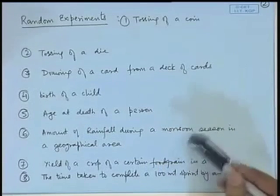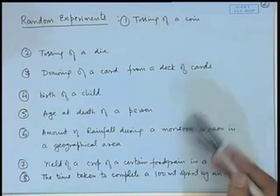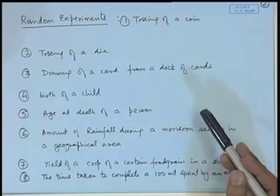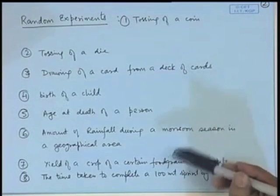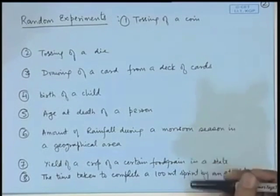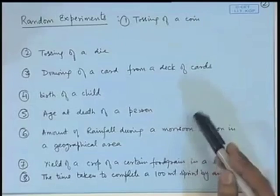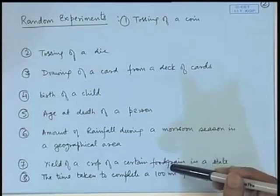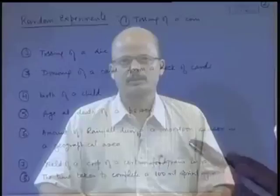So all of these events and experiments, although they may not look random beforehand, have outcomes that are not known, and therefore they are random. In the subject of probability and statistics, we study these types of phenomena. Let me now introduce certain basic terminologies of random experiments.